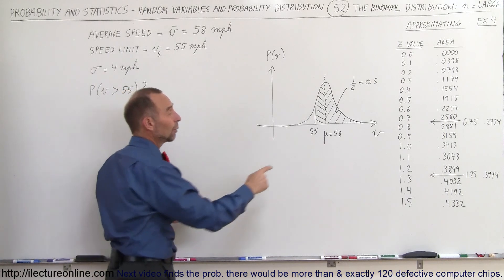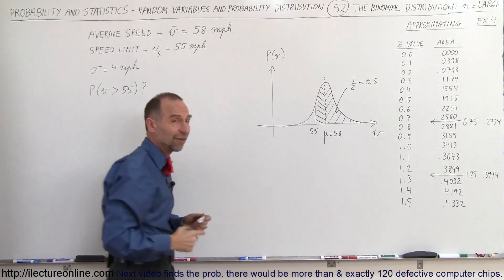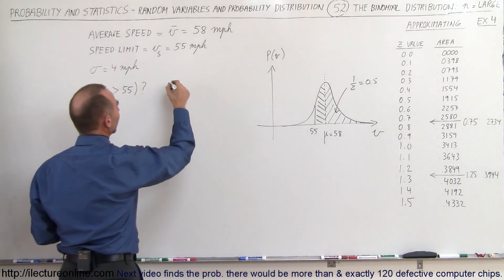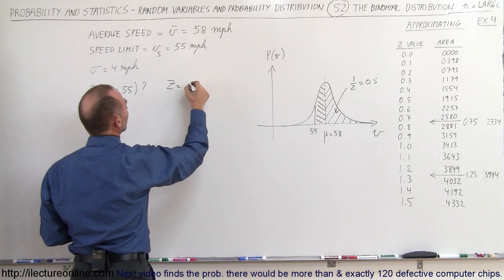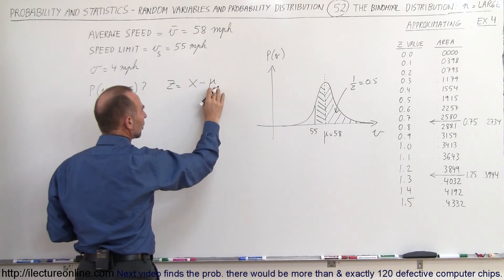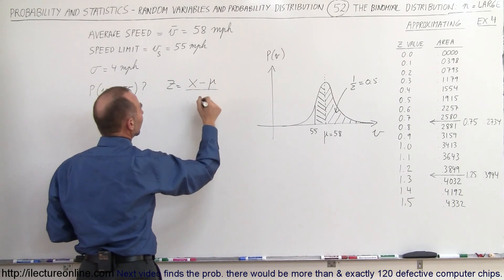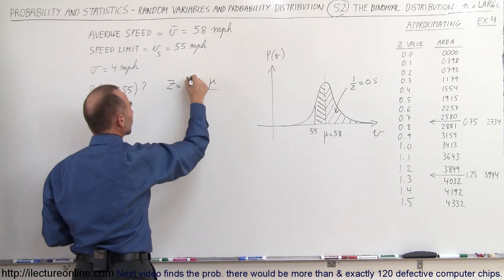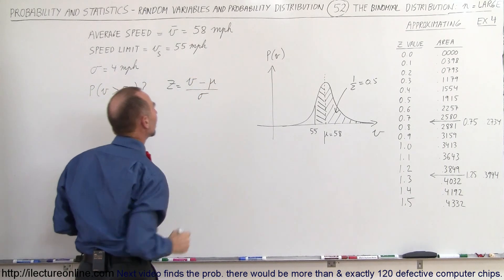So what we need to find is the equivalent Z value for 55 miles per hour. We can say that the Z value is equal to the value minus the expected value divided by the standard deviation. Instead of X, I'll use V here.